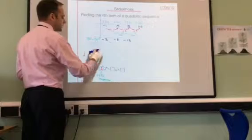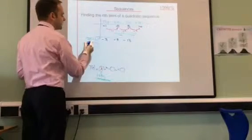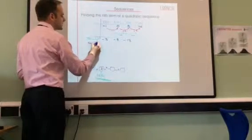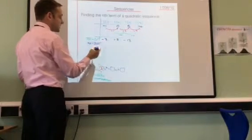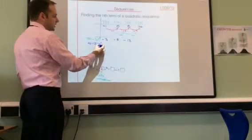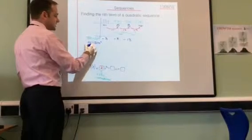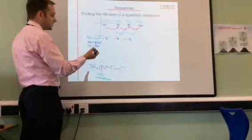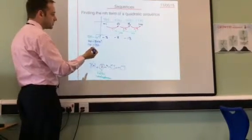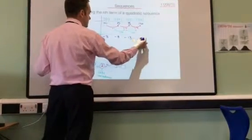Let's do the fourth one. The term is 14. I need to take away 2 lots of the term number squared. 2 lots of 16 is 32. So 14 minus 32 is going to be, hopefully, negative 18.